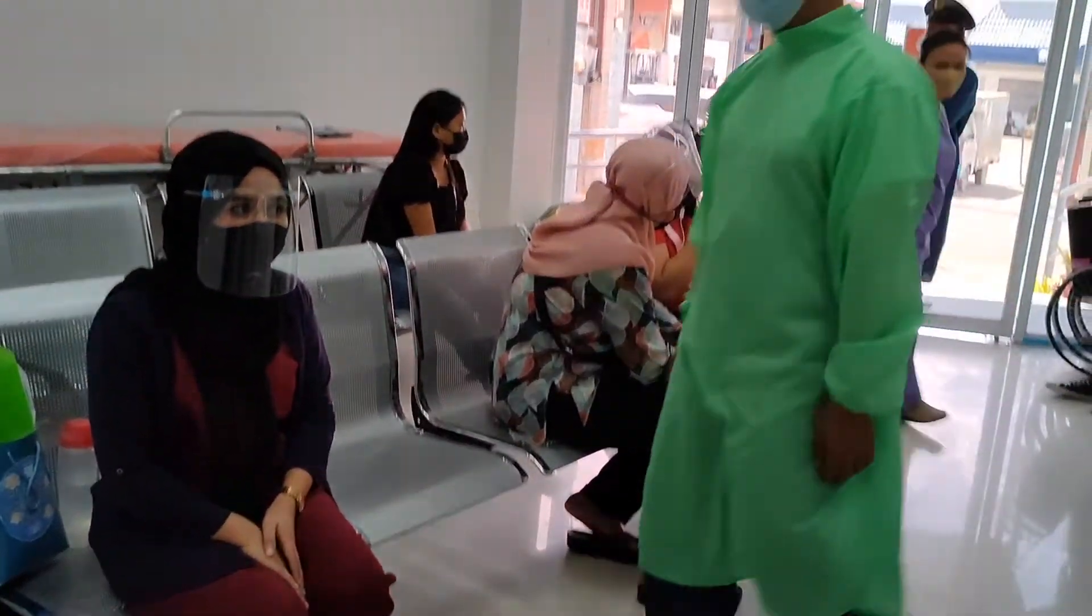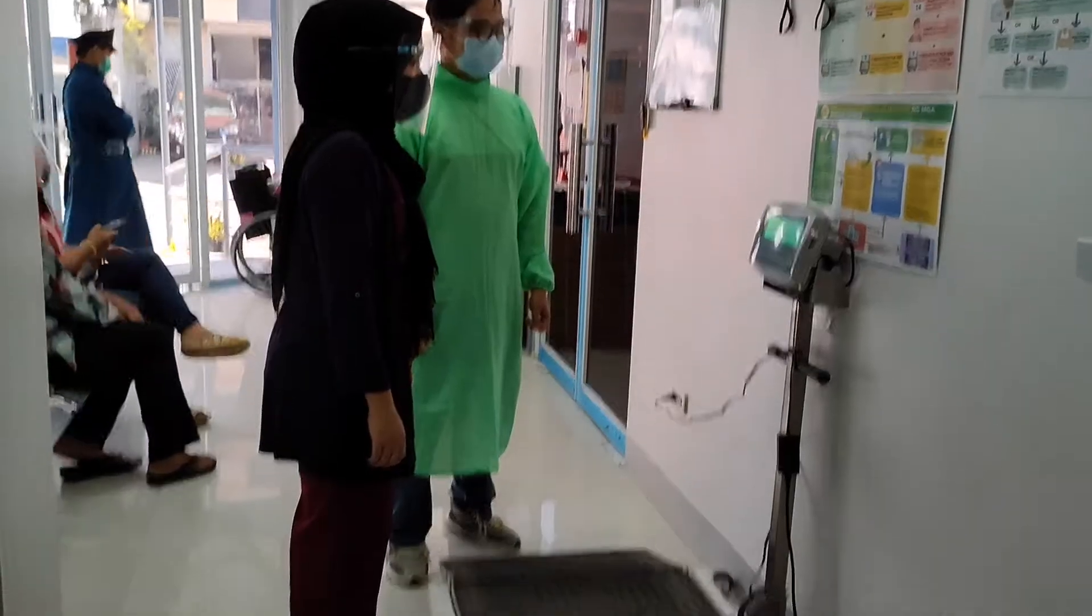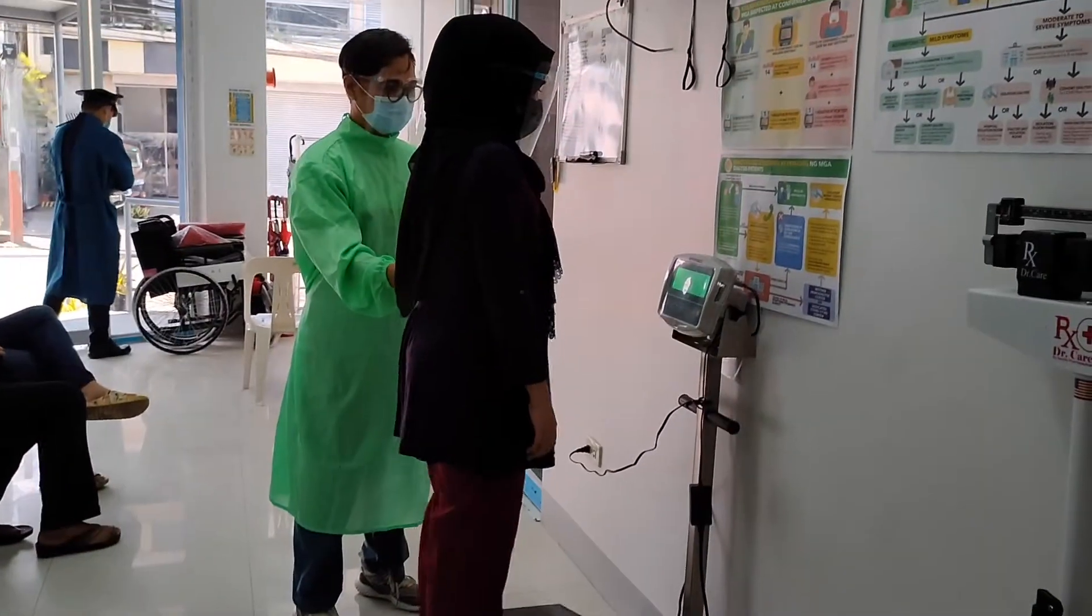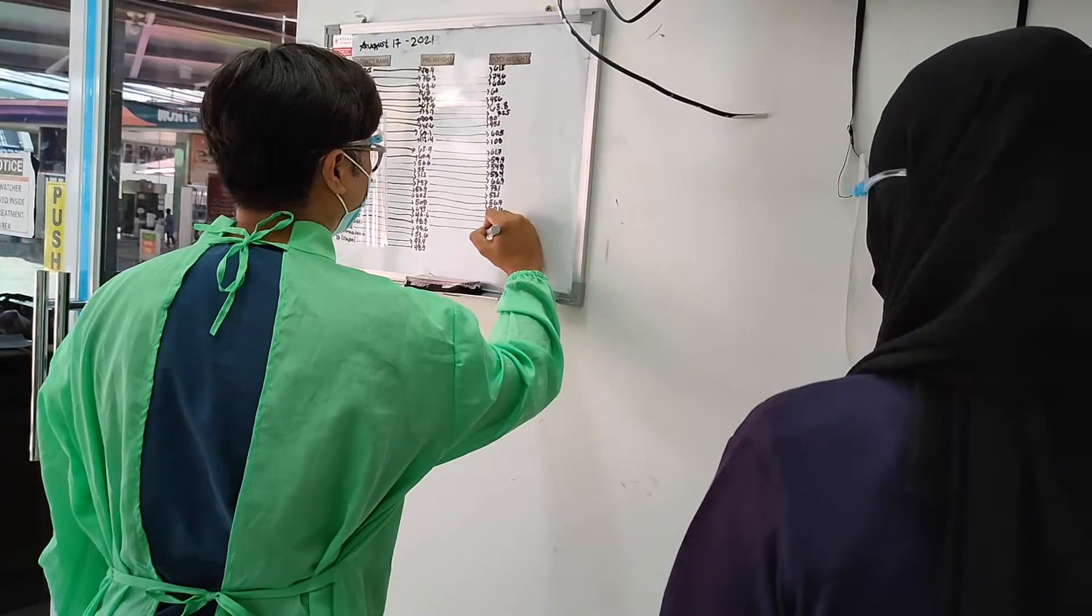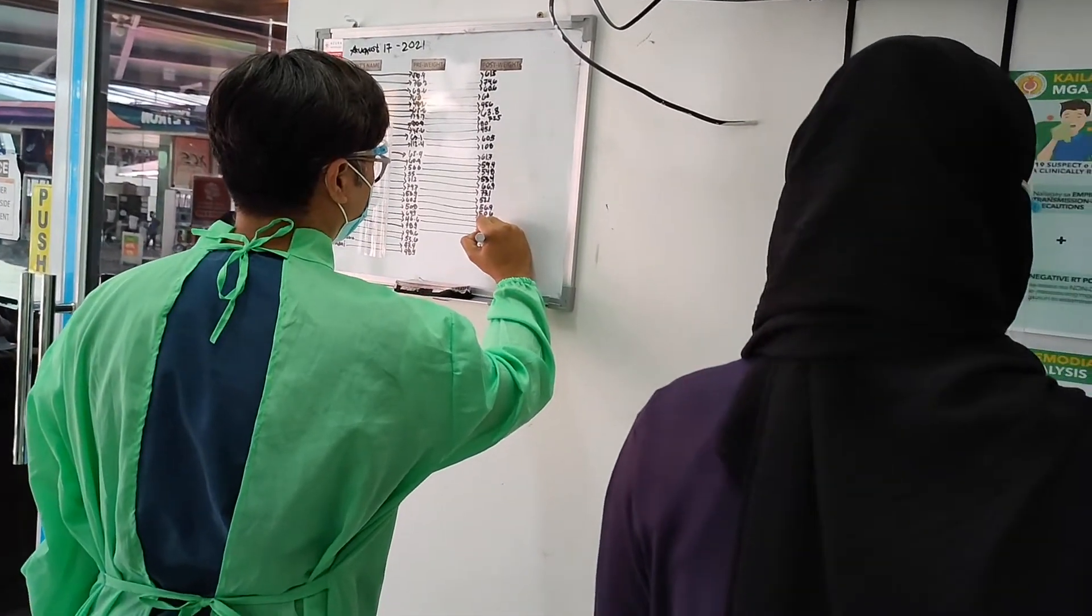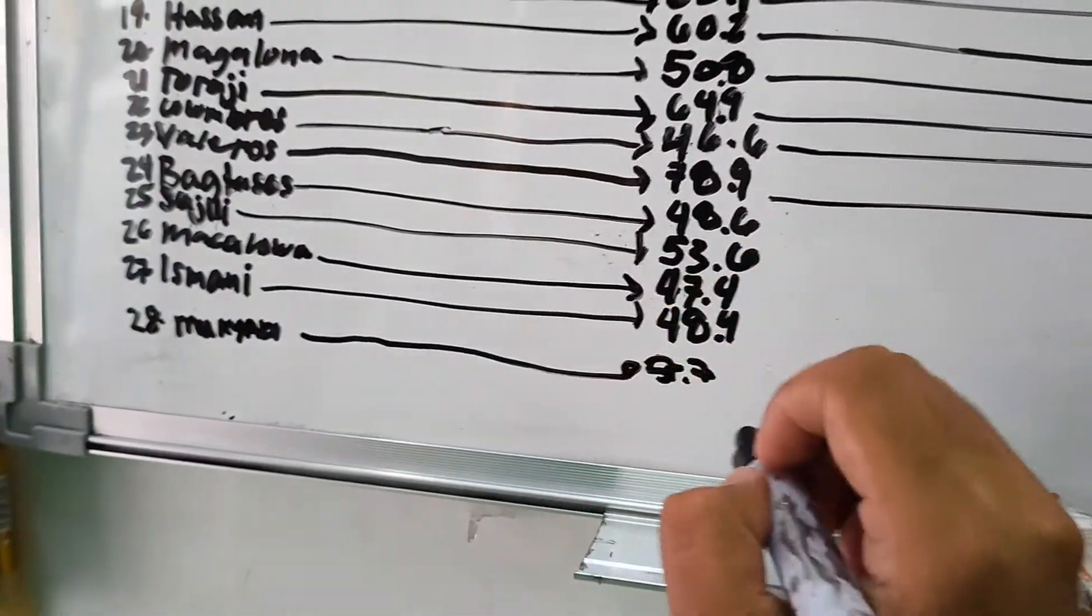During the pre-HD assessment, the nurse should take and record the patient's pre-HD weight. The UF goal is determined by the difference between the patient's weight from previous HD treatment and current pre-HD weight.